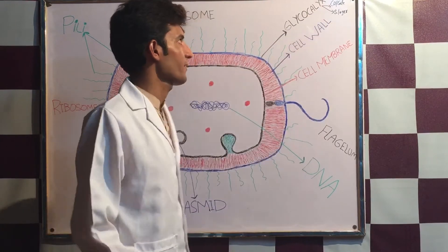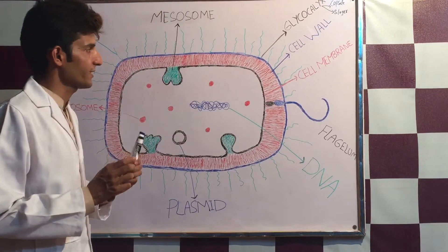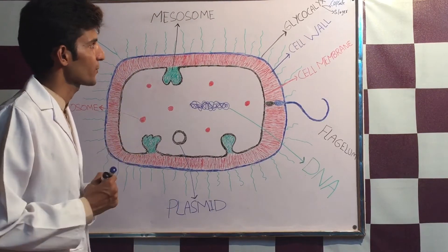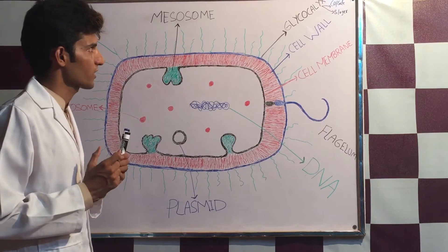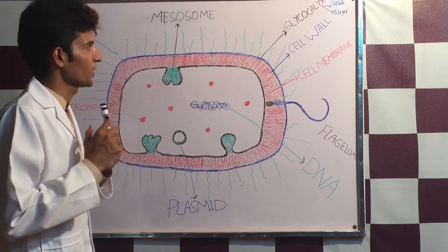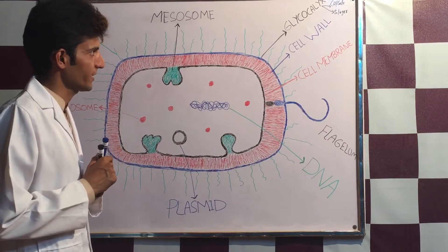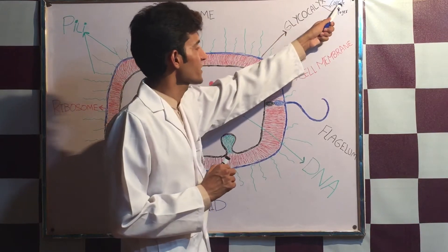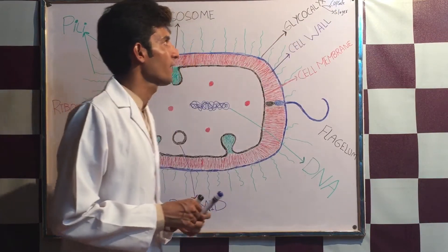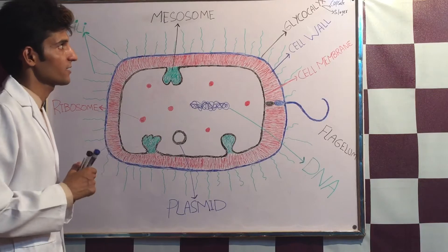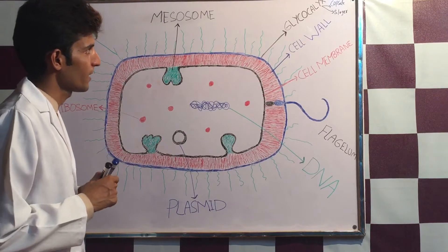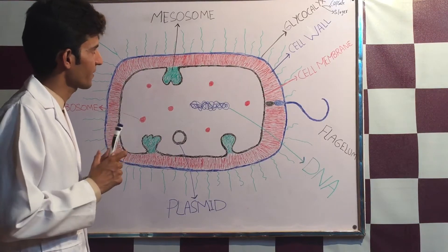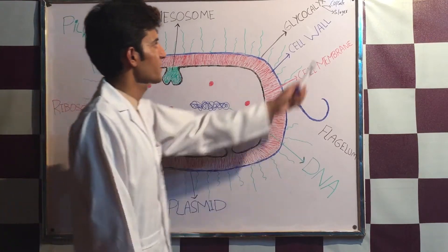The glycocalyx can be a capsule or a slime layer. If it is a well-organized, thick, and tough structure, we call it a capsule. It is composed of polypeptide and polysaccharide. This is the structure present in capsulated bacteria, and it increases the pathogenicity of those bacteria.